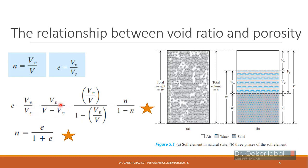After dividing by total volume, Vv/V appears in the numerator and denominator. We know Vv/V equals porosity n, so this simplifies to e = n/(1 − n). This is a very simple and important relation.